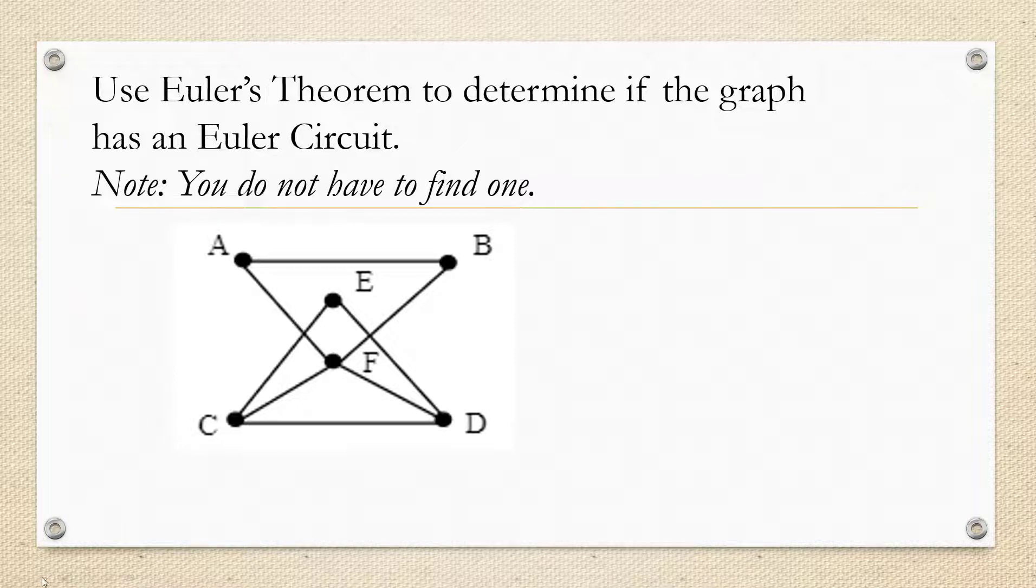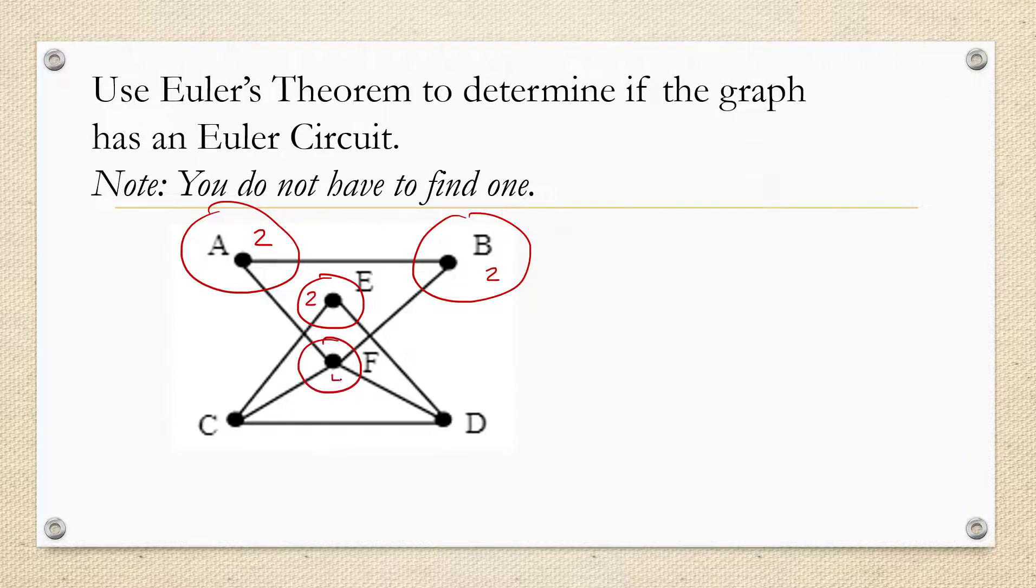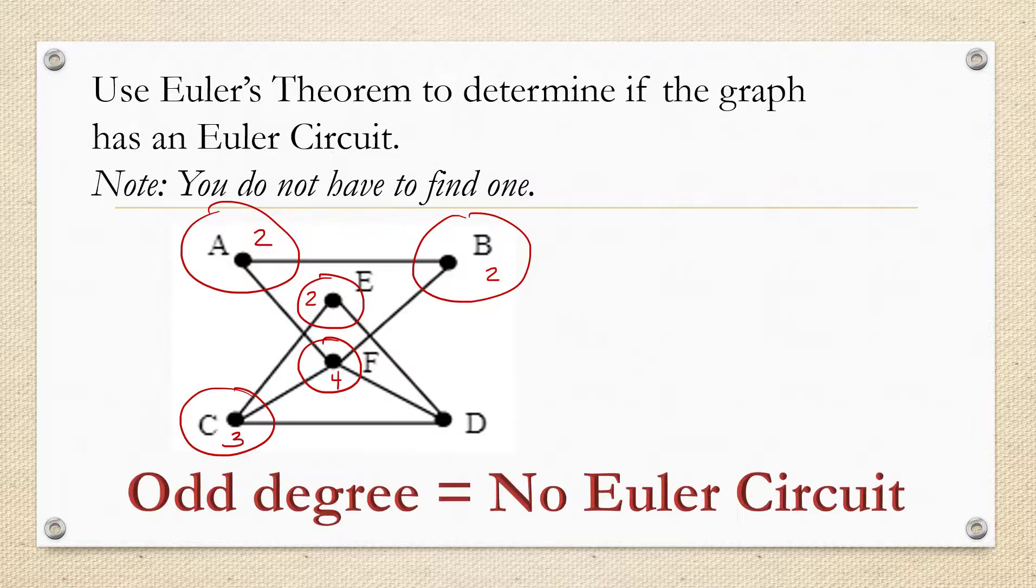All right, so we're going to look at the degrees of each vertex. So vertex A has a degree of two. Vertex B has a degree of two. Vertex E has a degree of two. Vertex F has a degree of four. Vertex C has a degree of three. We could actually stop right there because if even one of them has an odd degree, then the graph does not have an Euler circuit.